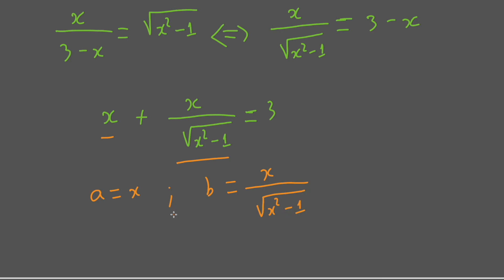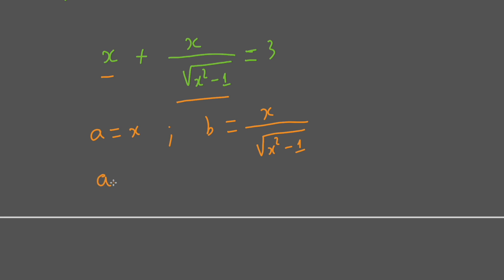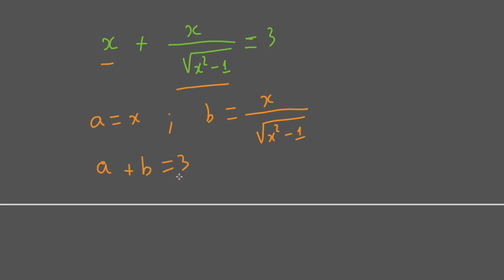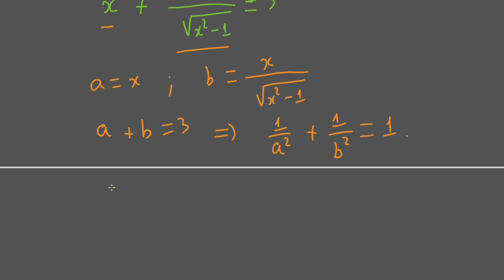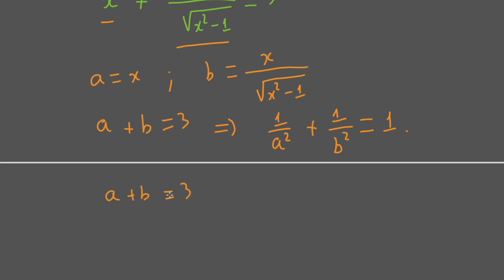And then 1 over a squared plus 1 over b squared equals 1. This gives us a system of equations, but it is a bit complicated to combine and solve.